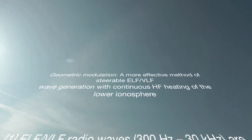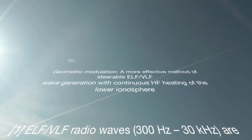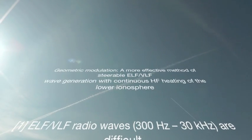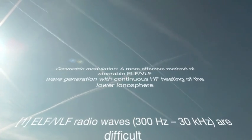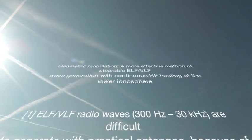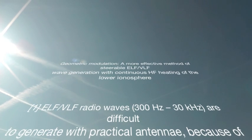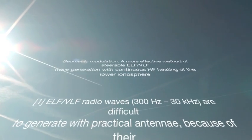Through the temperature-dependent conductivity of the lower ionospheric plasma, a patch of ionospheric current becomes a large radiating antenna.